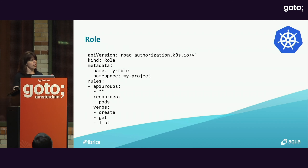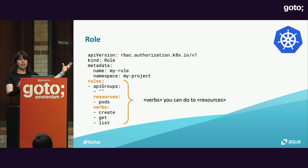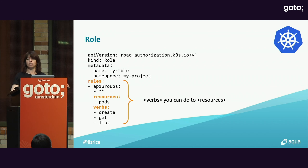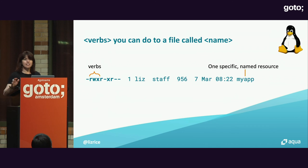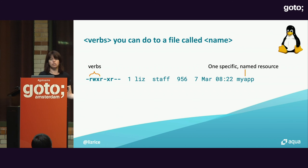Here's a YAML definition of a role — and what is a presentation without some YAML? You can see that the role defines a set of rules, and those rules say which verbs you're allowed to perform on which set of resources. It doesn't say anything about who can do it — it's just saying what actions you can take on what objects. This is similar to what we had in Linux: a set of verbs on a type of resource.